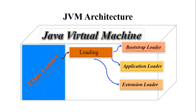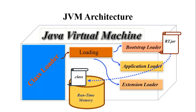Those three parts are: bootstrap loader, application loader, and extension loader. The bootstrap class loader is responsible for loading the .class file from rt.jar. From rt.jar, the .class file is fetched and saved into memory, and this process is done by the bootstrap loader.